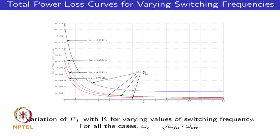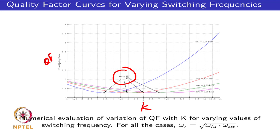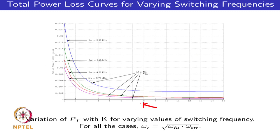Looking at the effect of this k reduction by a factor of 2 on power loss, the power loss in per unit versus k is plotted for switching frequencies ranging from 9.75 kHz to 2.25 kHz. In all cases, the selection of k equal to 0.5·ω_r/ω_fu places the operating point beyond the knee of the power loss curve. Even for a low switching frequency such as 2.25 kHz, the power loss is less than 0.6 percent for this selection of k.